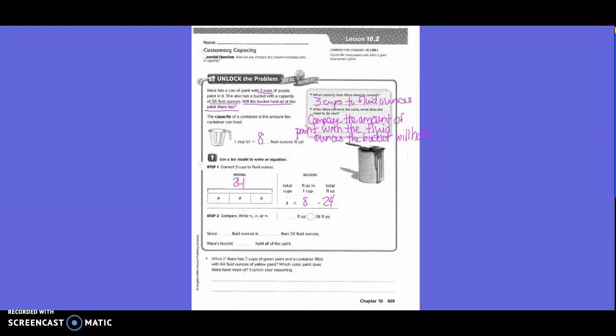Compare it with less than, equal to, or greater than. So how many fluid ounces did we get? 24. So 24 fluid ounces is less than 26 fluid ounces. Mara's bucket will hold all of them because her bucket holds 26 and she only had 24, so it will hold all of it.